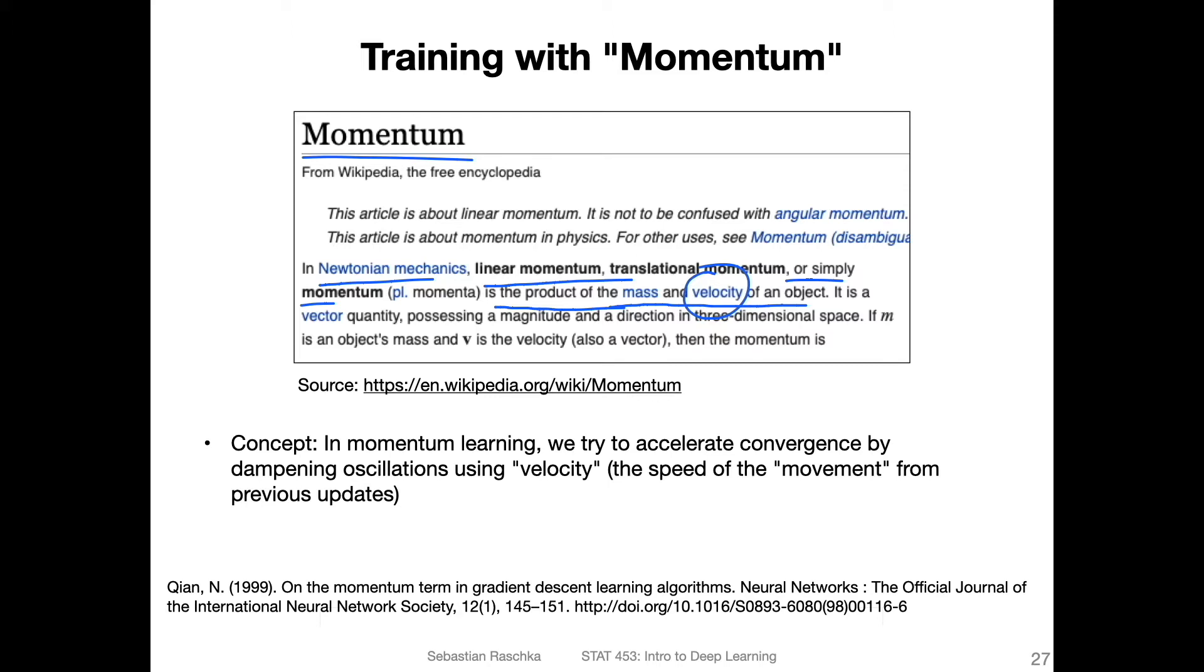What we are trying to do in momentum learning is accelerate the convergence by dampening oscillations using this velocity, which is the speed of the movement from previous updates. By taking into consideration how the updates have progressed over the course of time, we can use that to dampen these oscillations. This goes back to a paper from 1999, but it's still a very popular technique in deep learning, especially in combination with learning weight decay.